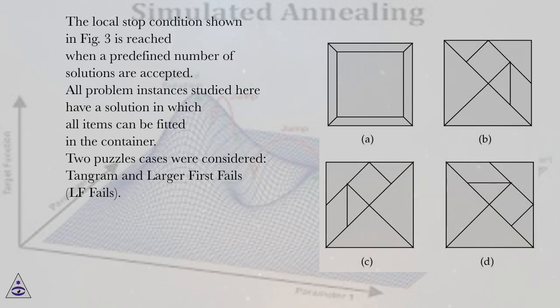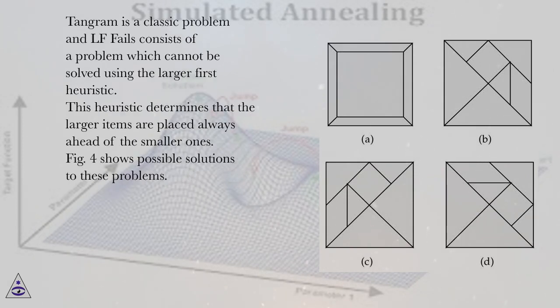Two puzzle cases were considered: Tangram and Larger First Fails (LF fails). Tangram is a classic problem and LF fails consists of a problem which cannot be solved using the larger first heuristic. This heuristic determines that the larger items are placed always ahead of the smaller ones. Figure 4 shows possible solutions to these problems.